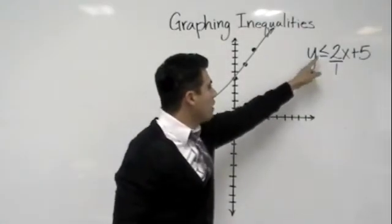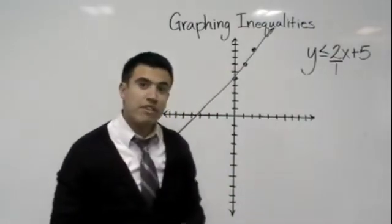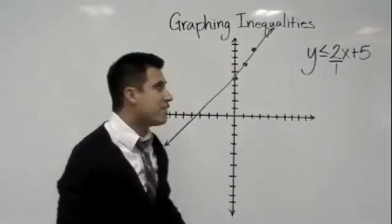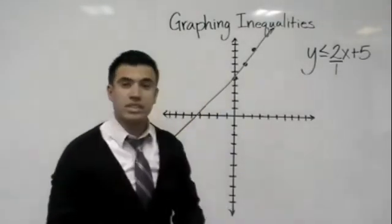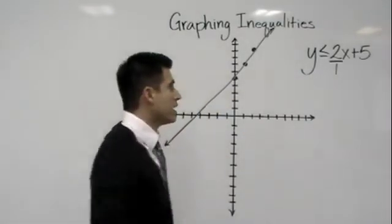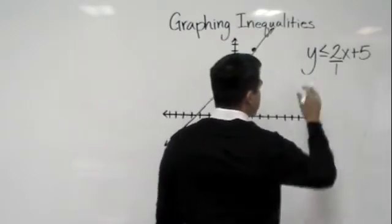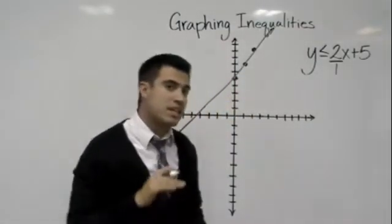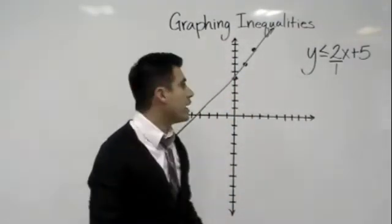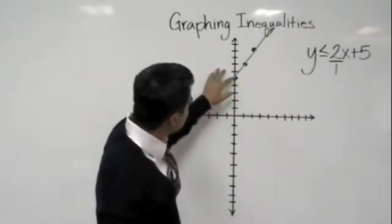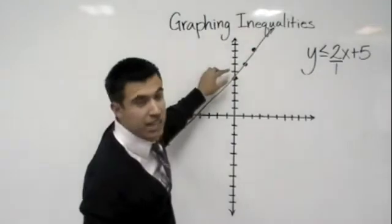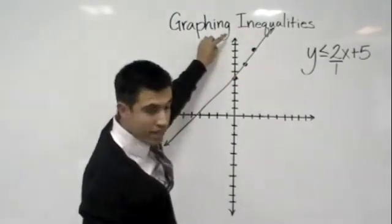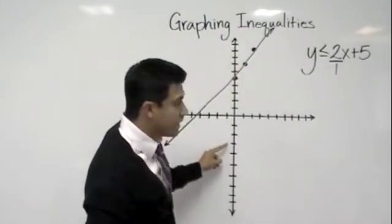Now, we want to see where we shade because when we're graphing inequalities and we shade, we have to decide if we shade up or down. Here's the secret that I use. It says y is less than, so it means everything that's less will go ahead and get shaded. So if we look at our y-intercept and go up, do the numbers get greater or do they get less? They get greater, right? And if we go down, they get less.